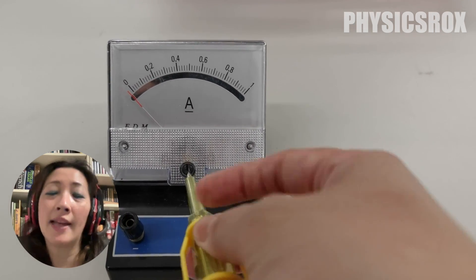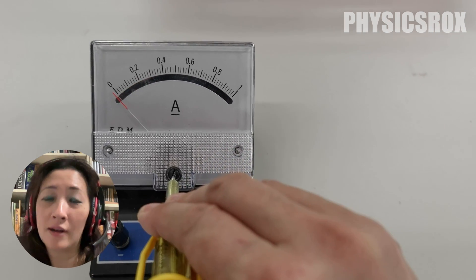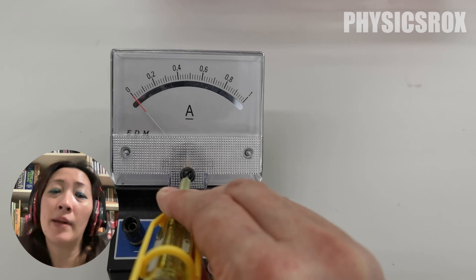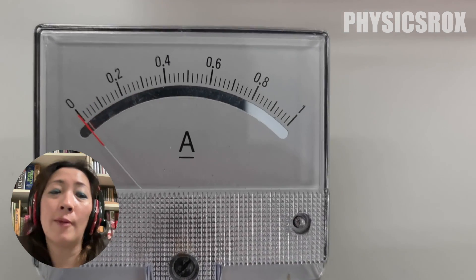If the meter has an anti-parallax mirror, just like this ammeter, ensure that when the needle is pointing to zero, the needle is overlapping its own reflection to avoid parallax error.